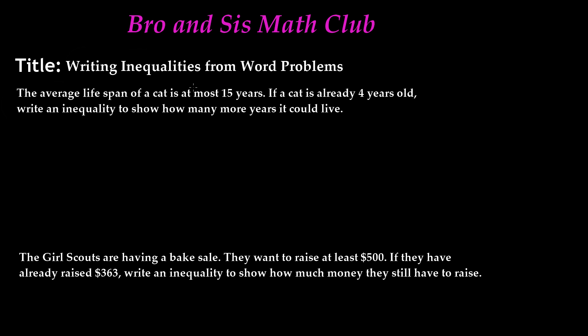Our first word problem reads: the average lifespan of a cat is at most 15 years. If a cat is already four years old, write an inequality to show how many more years it could live. Now, this is just an average lifespan, so it could possibly live more than 15 years, but let's say it can only live 15 years — so at most.